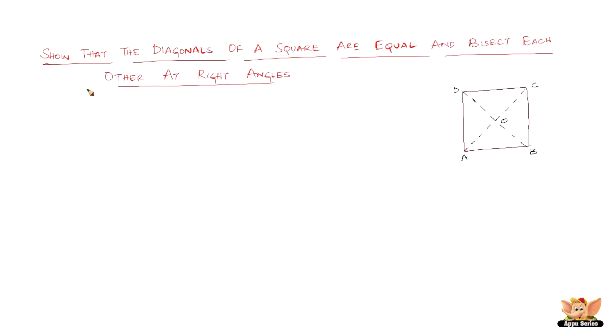Now in this video let us learn how to show that the diagonals of a square are equal and bisect each other at right angles.